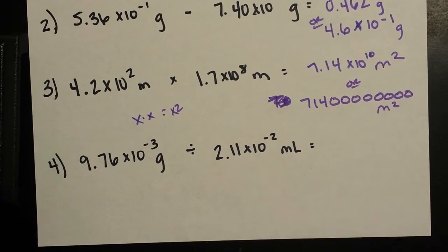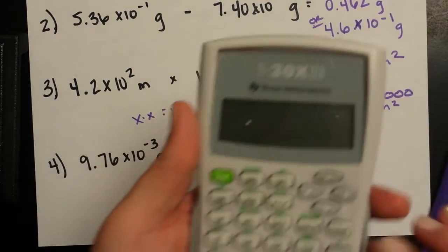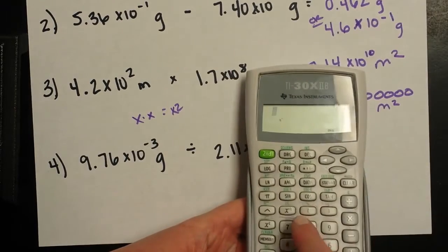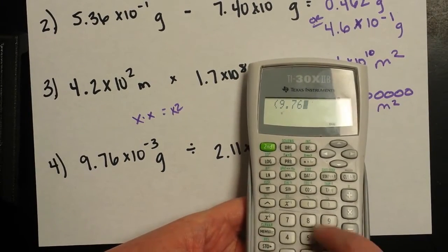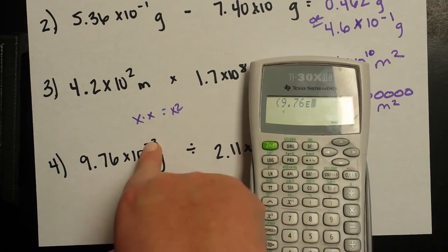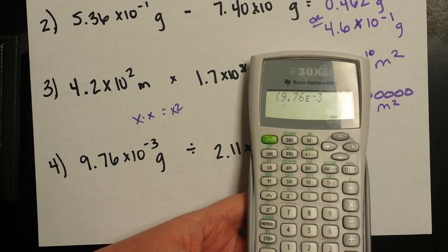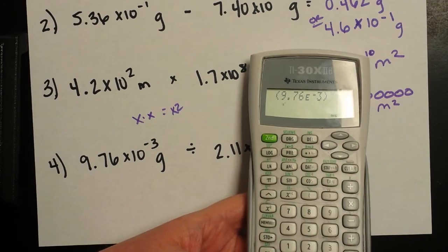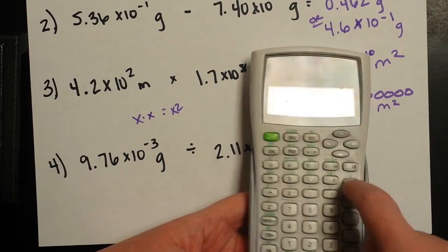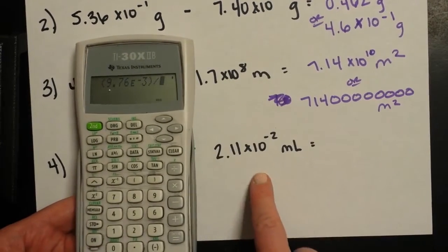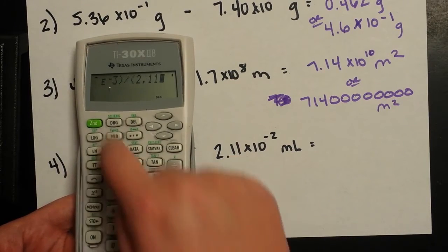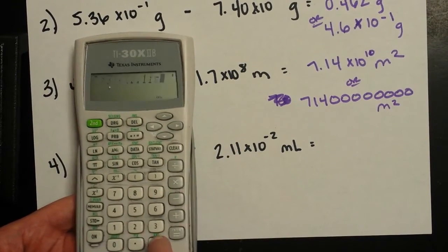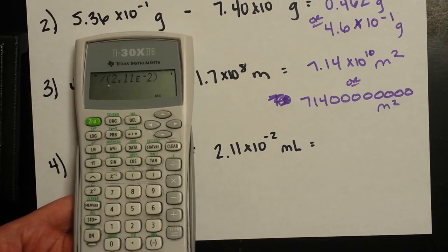Let's try division. So a new number. I'm going to start a new set of parentheses. Coefficient is 9.76 multiplied by 10 to the negative third power. Close your parentheses. Now we're going to divide it by, new number is 2.11 times 10 to the negative two.